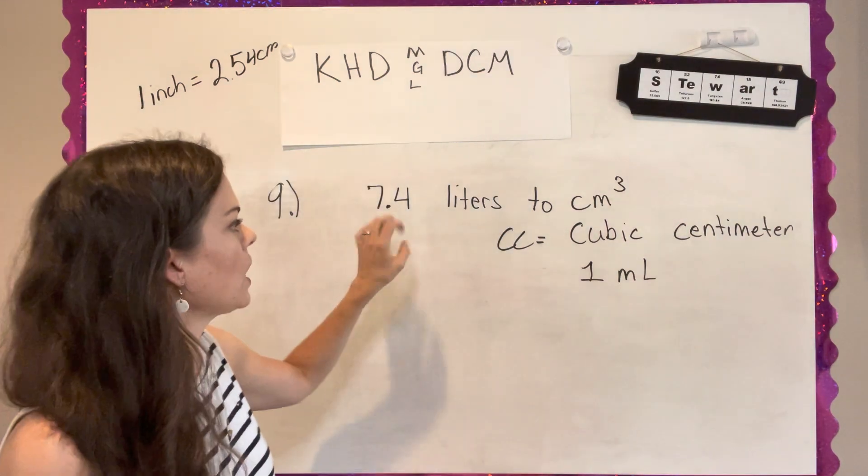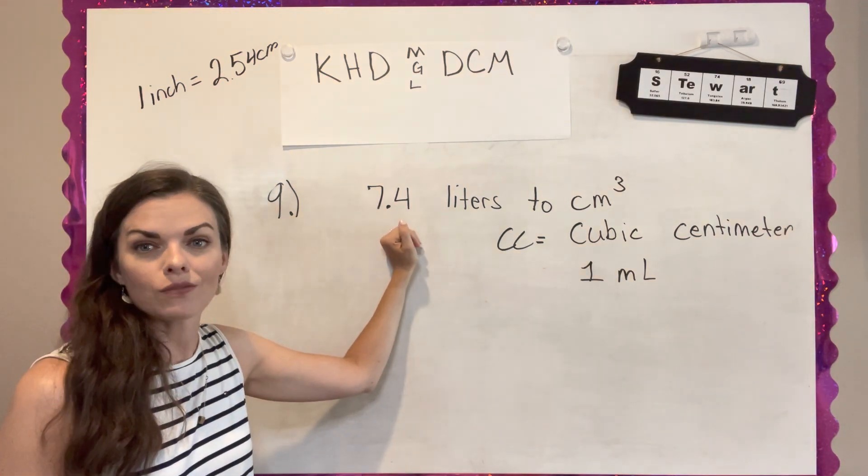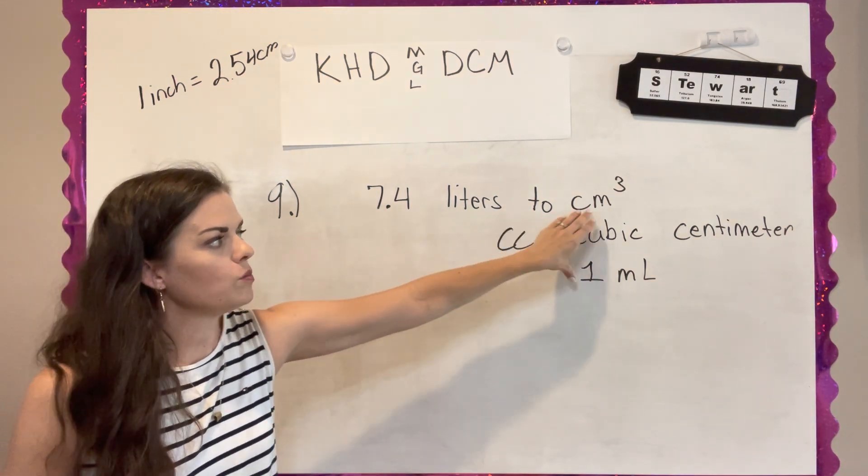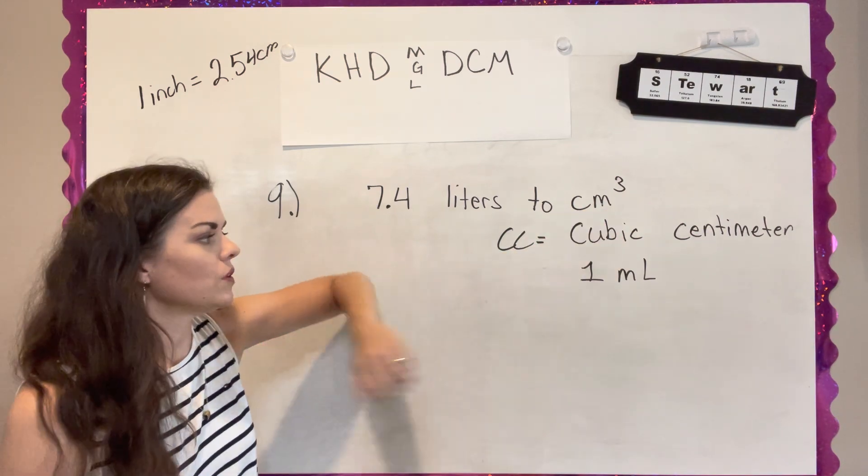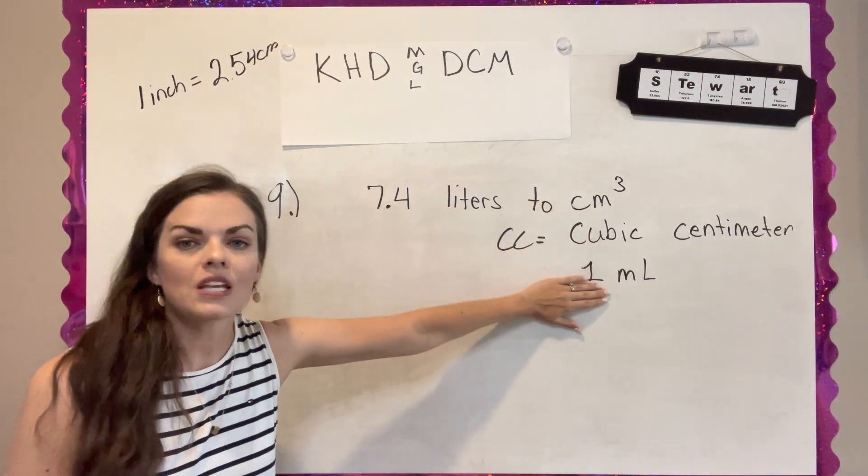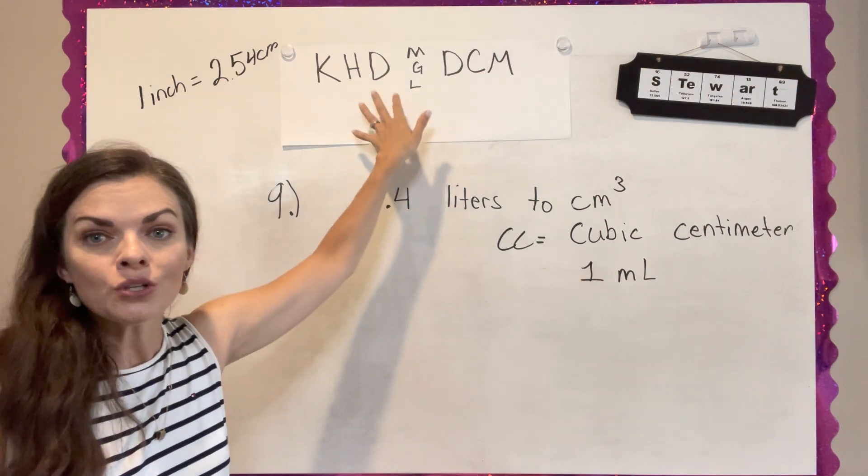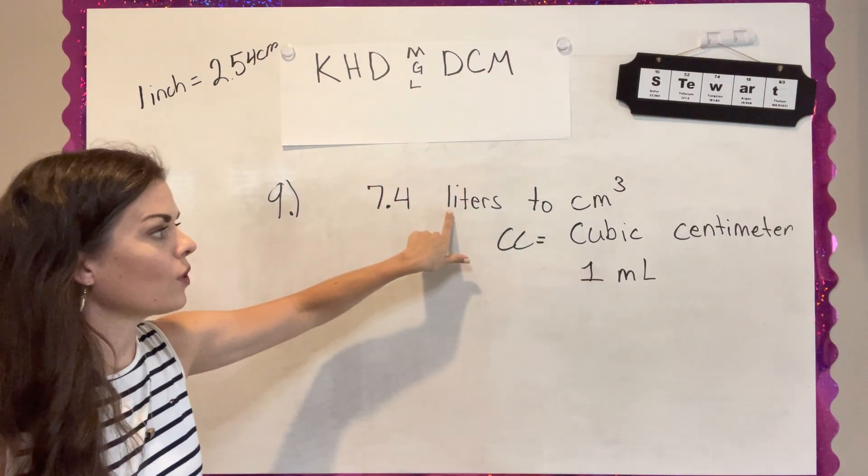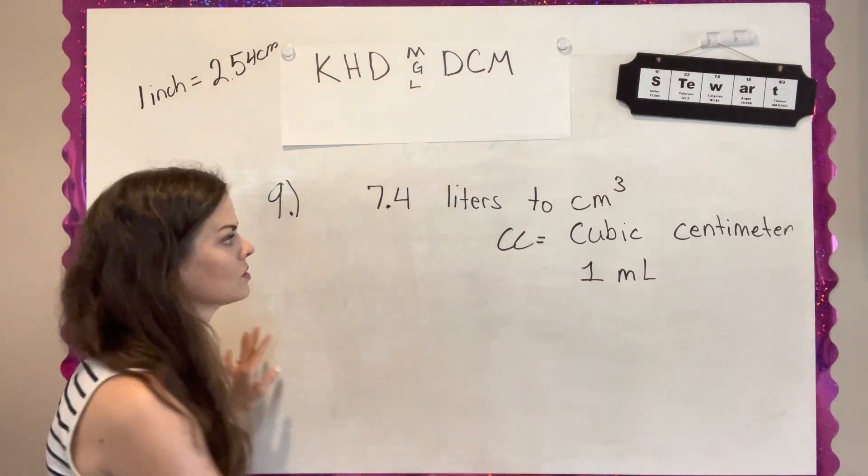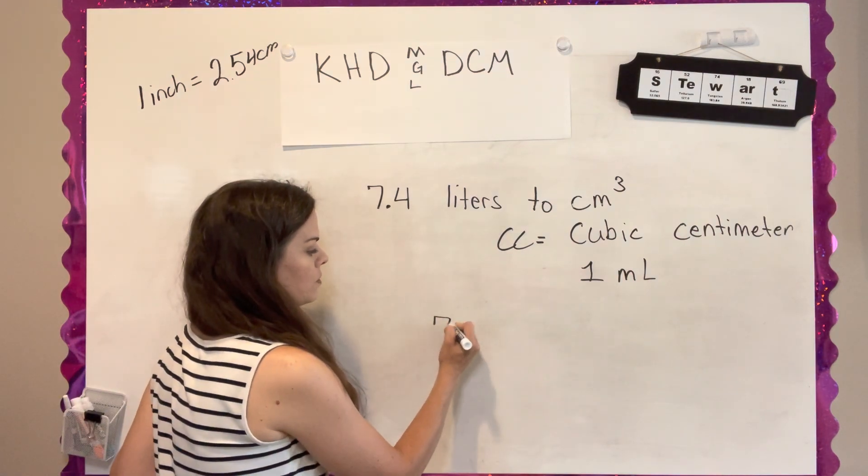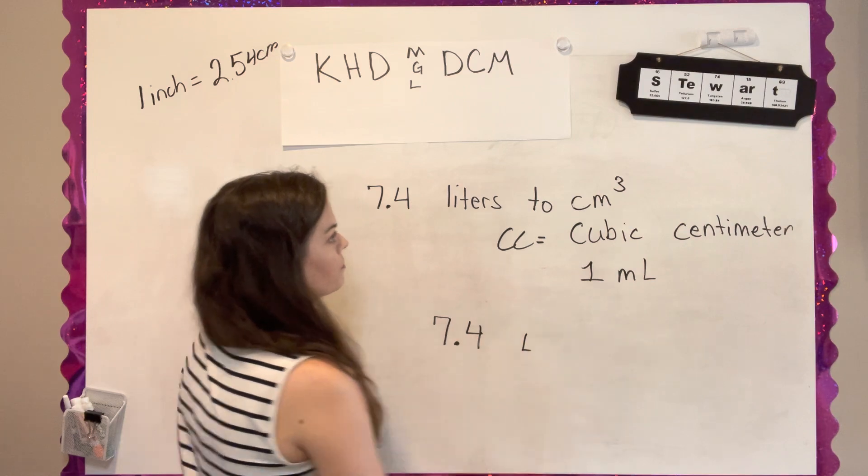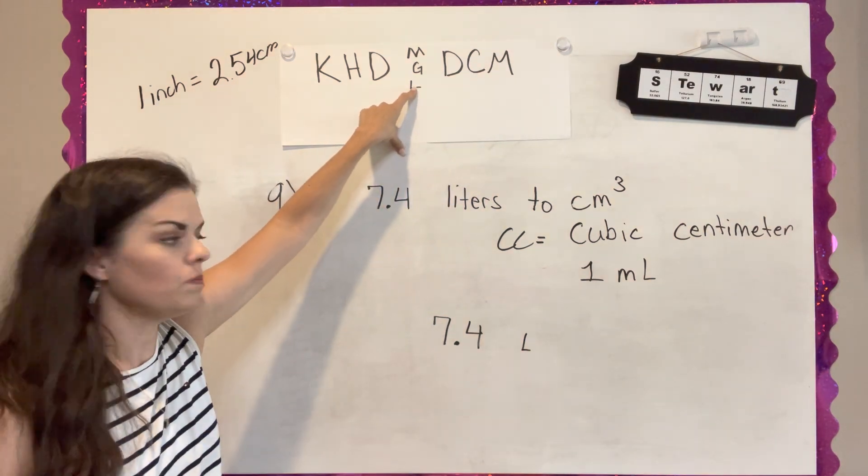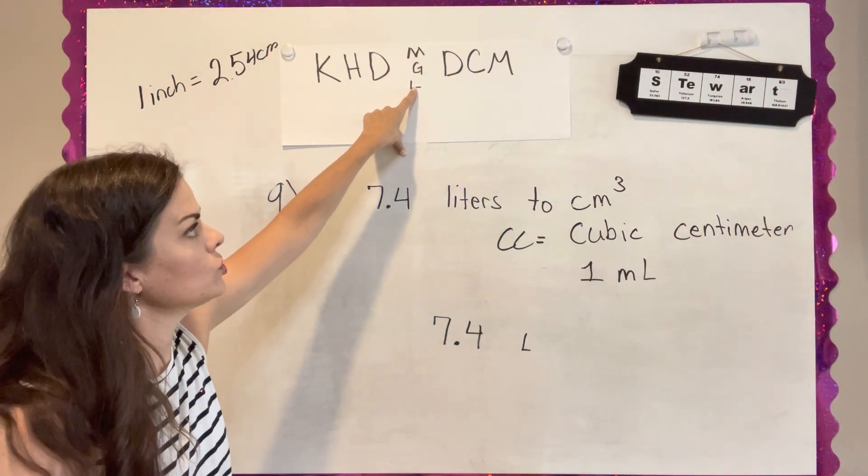Question number nine wants me to take something that is 7.4 liters and put it in centimeters cubed. This stumps a lot of people. But if you think that a centimeters cube is the same as a milliliter, we can use King Henry to go from liters to milliliters. So if I take 7.4, and this is liters, that's the L. And I am going to the milli.